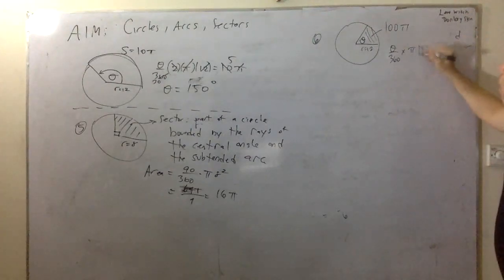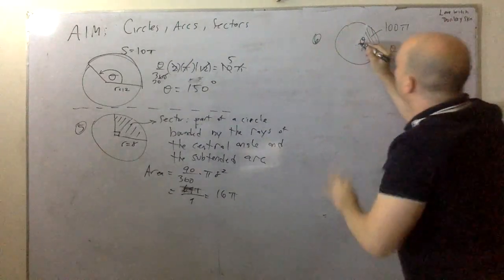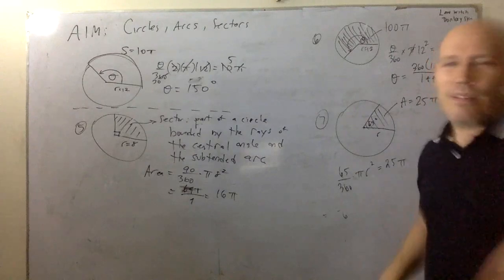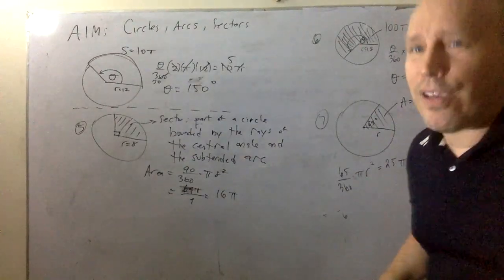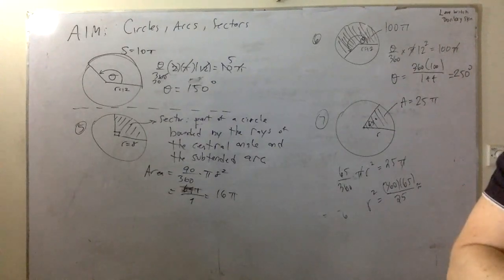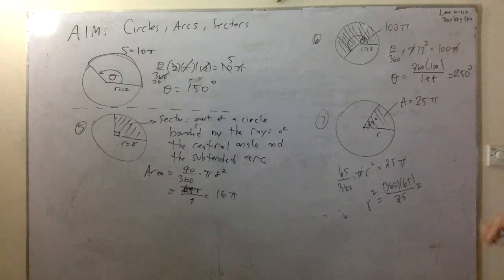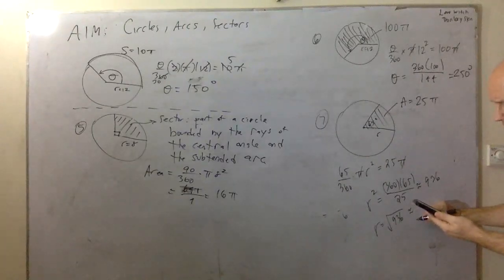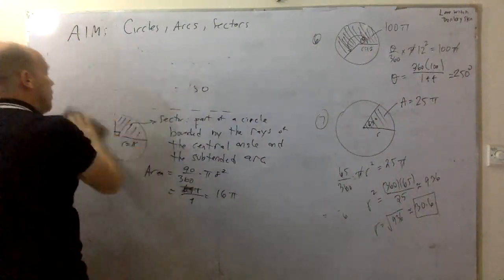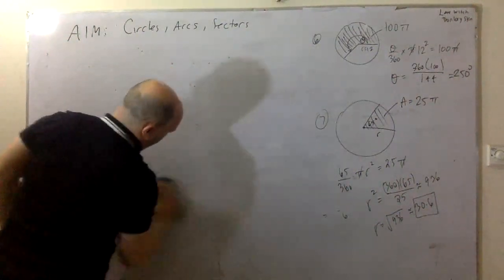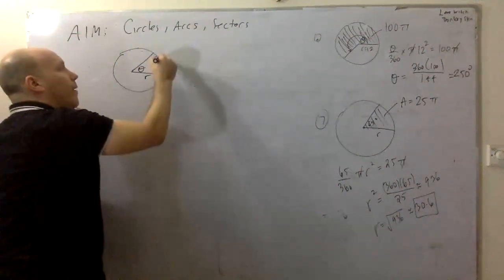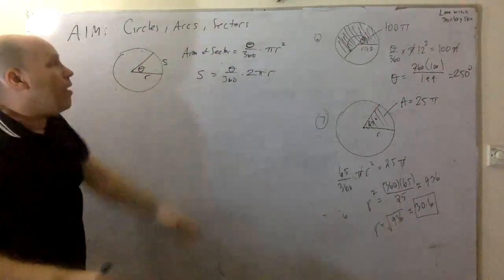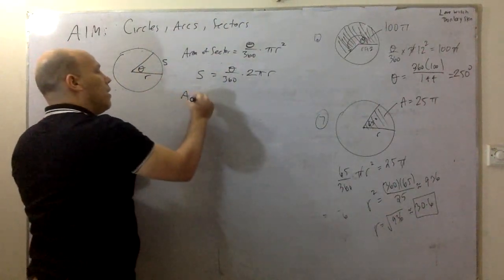It turns out the radius is half the diameter, or the diameter is two times the radius. When we talk about circles, we also talk about circumference and area. The circumference is the distance around the circle, and we know that formula to be 2πr or πd. The area is the space inside the circle, which is πr².